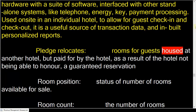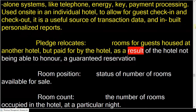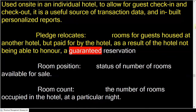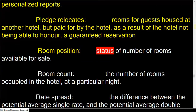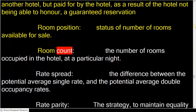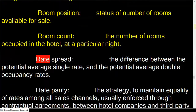Walk: relocates rooms for guests housed at another hotel but paid for by the hotel as a result of the hotel not being able to honor a guaranteed reservation. Room position status: the number of rooms available for sale. Room count: the number of rooms occupied in the hotel at a particular night.